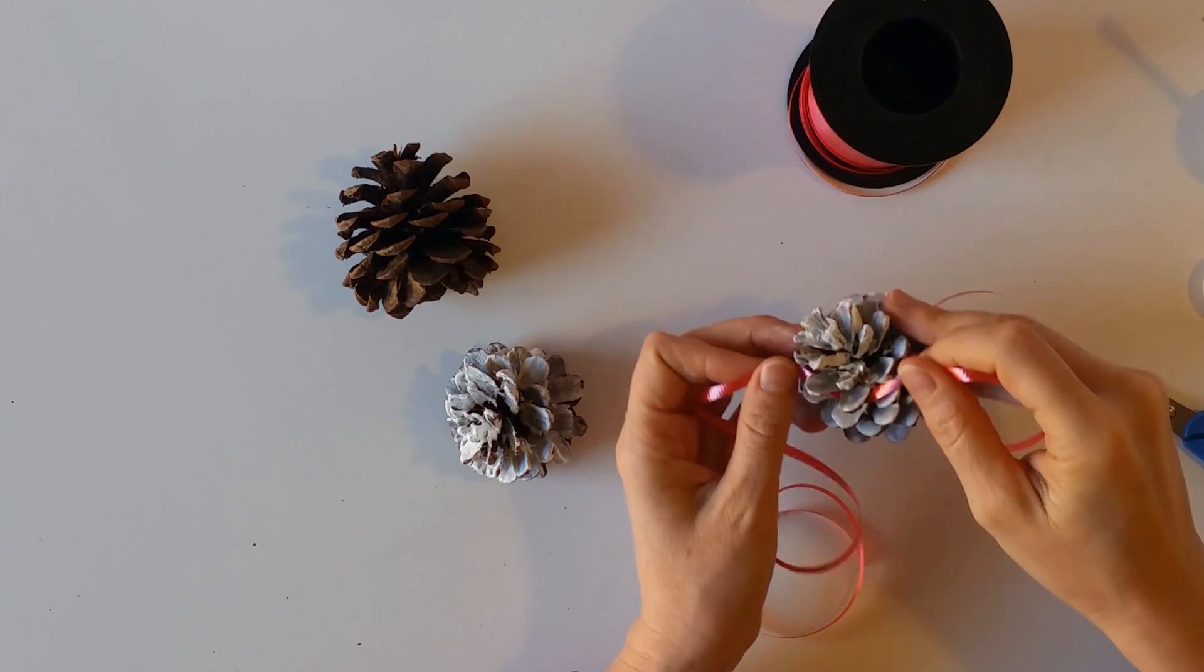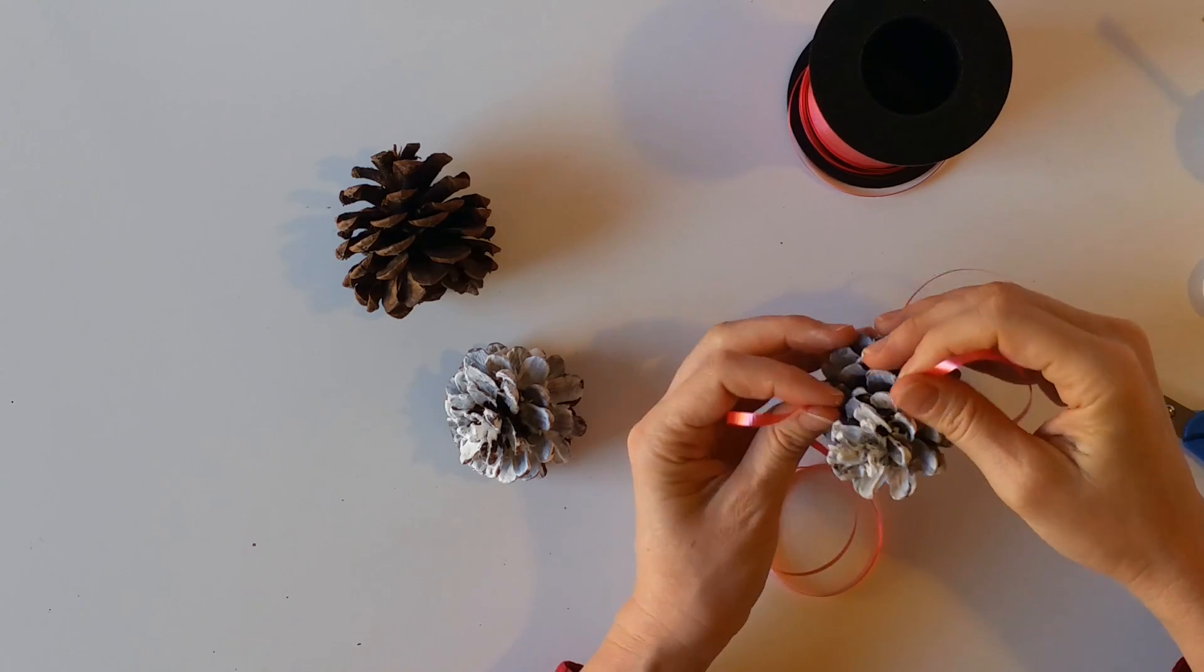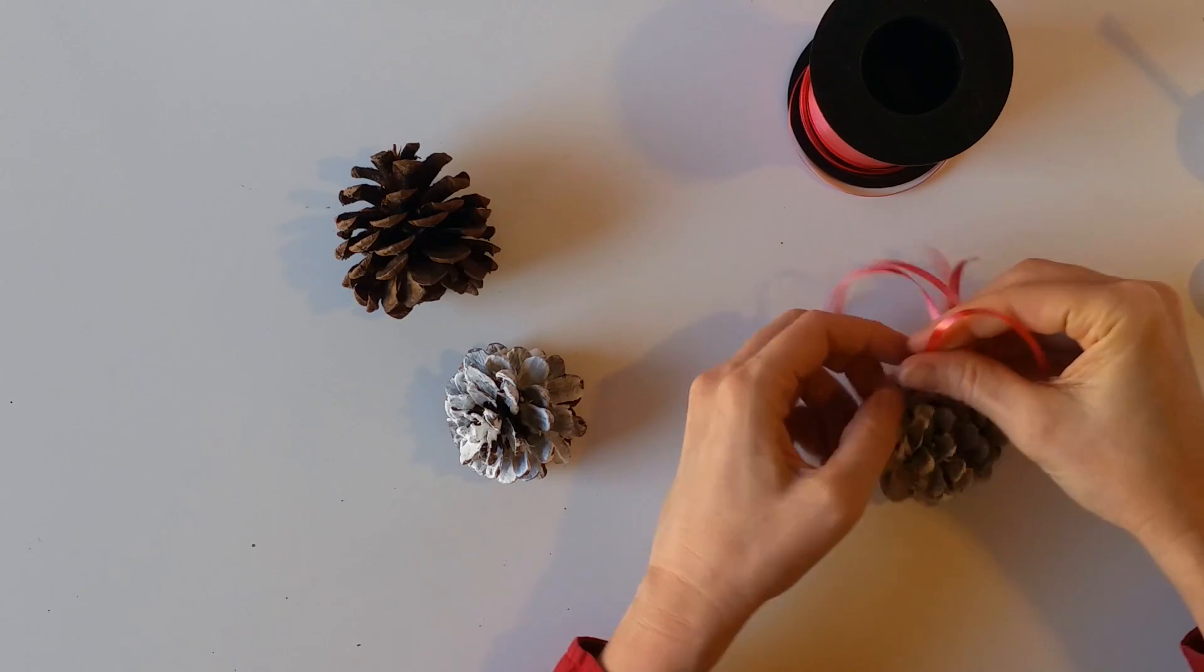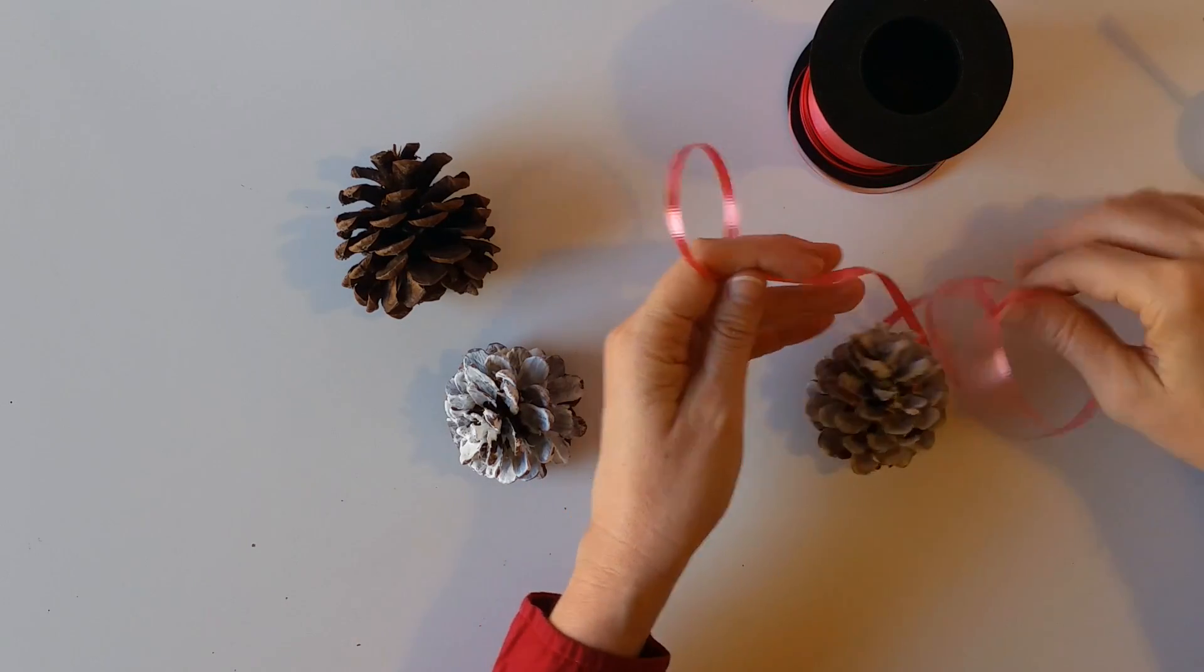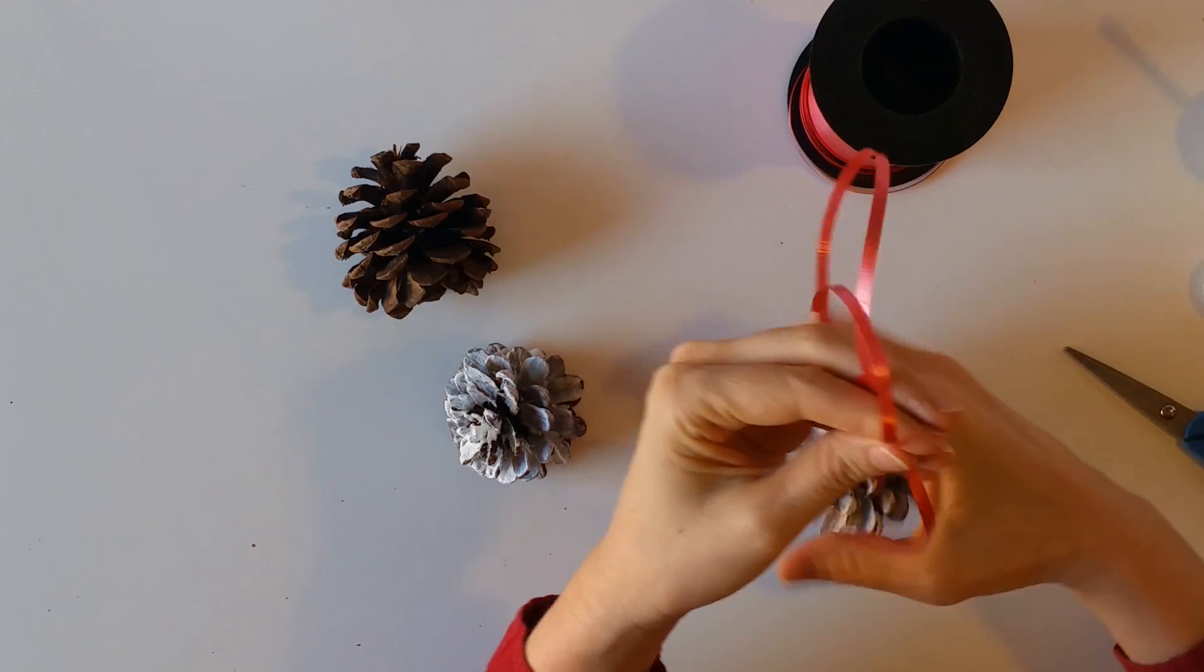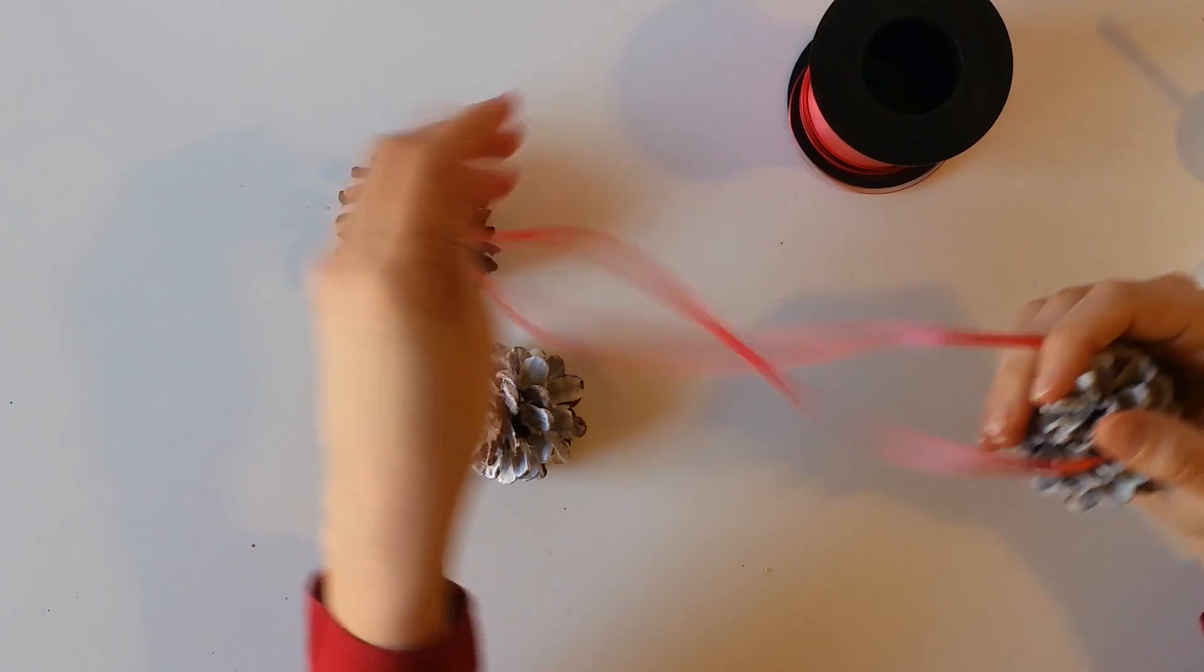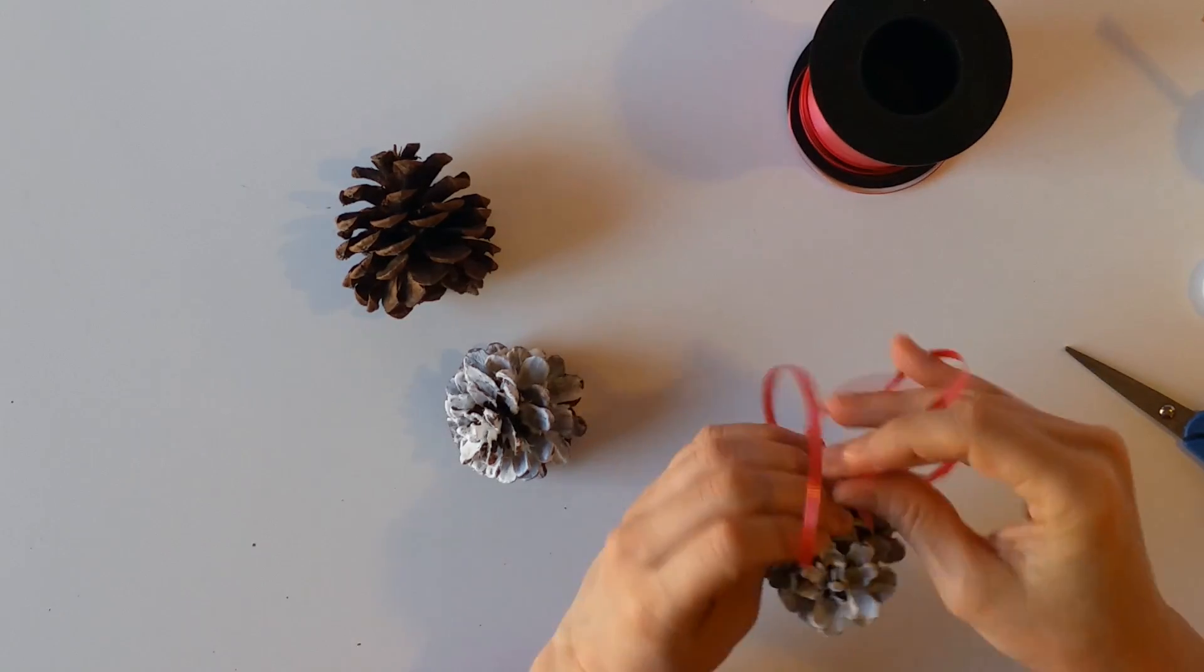So just go around closer to the top wherever you can stick the ribbon around and it won't fall off. And then just make a knot. Go over and under. Pull it tight so it gets in there nice and snug.